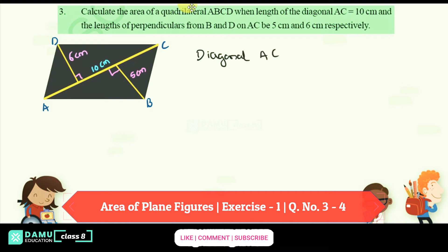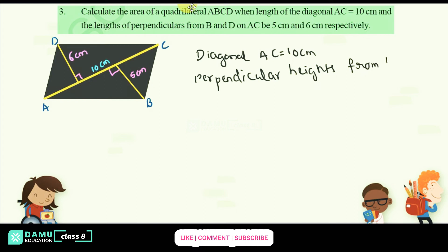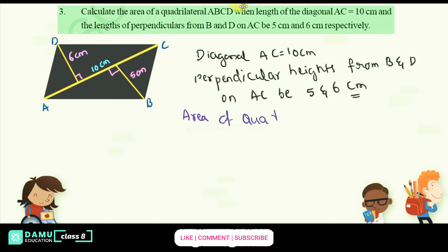Diagonal AC is equal to 10 cm. The perpendicular heights from B and D on AC are 5 and 6 cm. The formula for the area of a quadrilateral is: Area = half into diagonal into (H1 plus H2), the perpendicular heights.